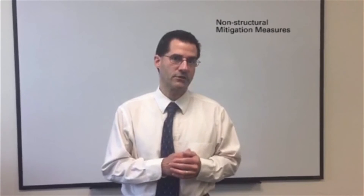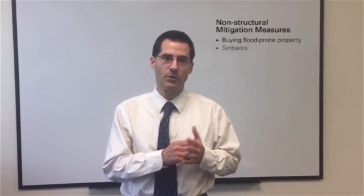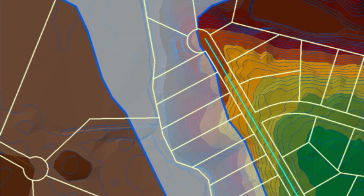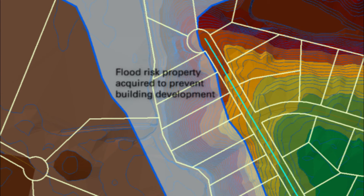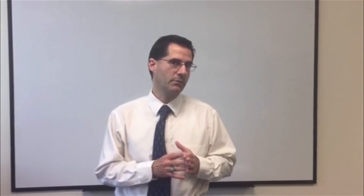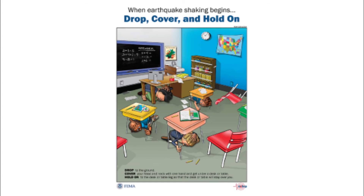On the other side, we also have non-structural mitigations like we see here. These are things that don't involve building but still provide protection. This could be things like acquiring flood-prone properties so that nobody builds there and keeps anybody from getting hurt in the flood, having setbacks to reduce the level of development in a floodplain, or it could even be public outreach campaigns — things like drop, cover, and hold in an earthquake or turn around, don't drown during a flood.